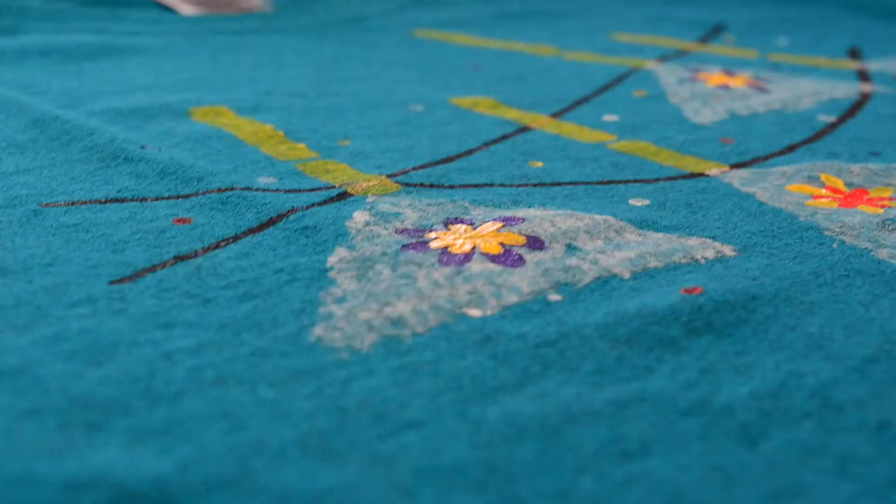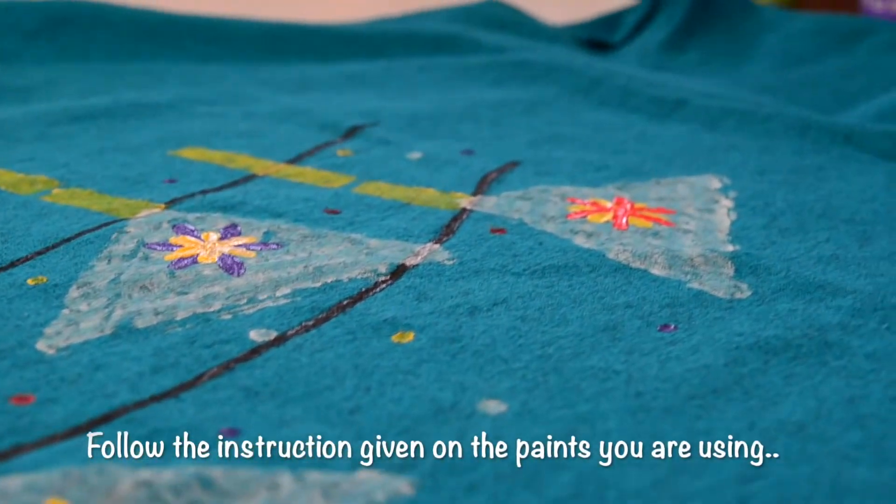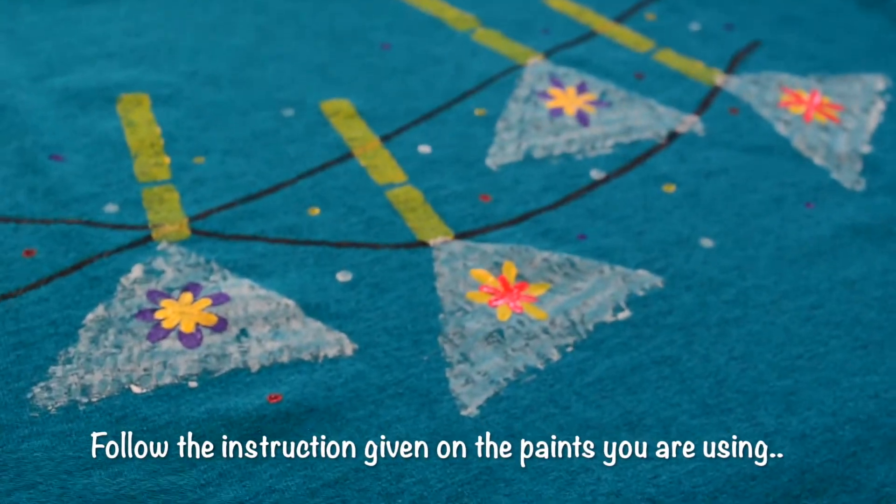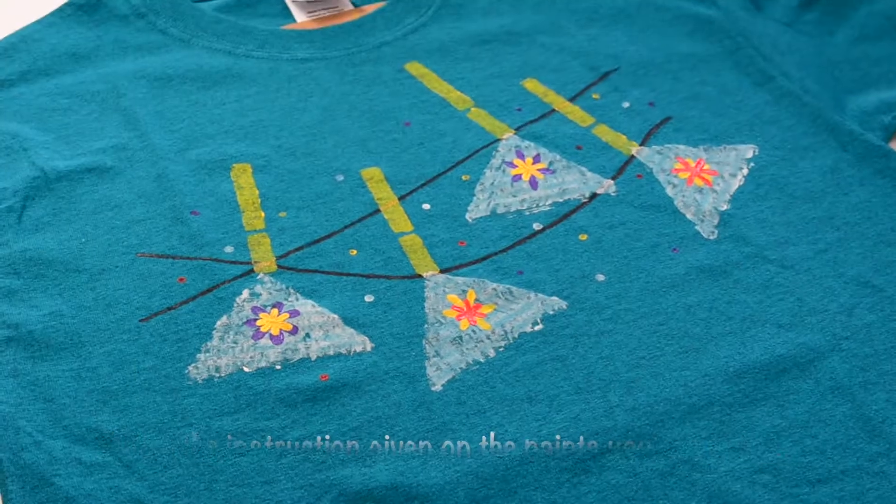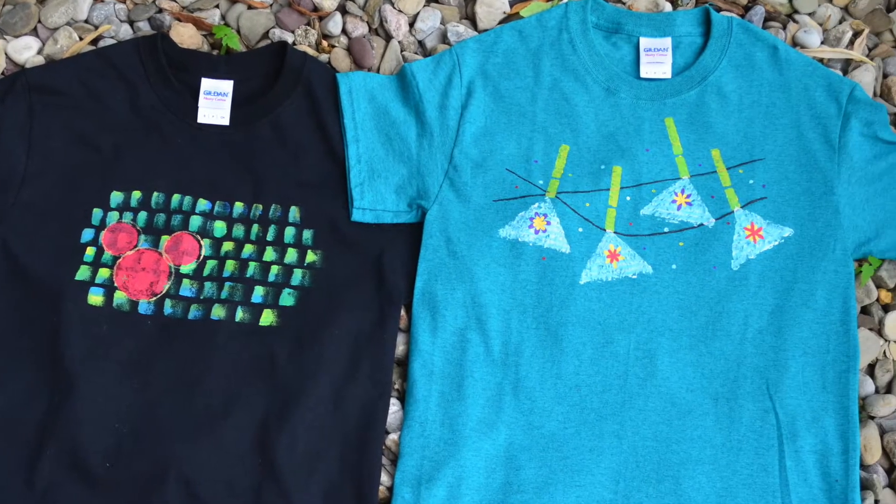And we are done with this pretty colourful t-shirt. As per the instructions on my paints, I will have to let these t-shirts dry flat for 4 hours and then these t-shirts could be washed after 72 hours turning it inside out.